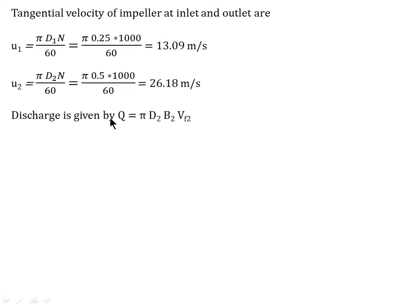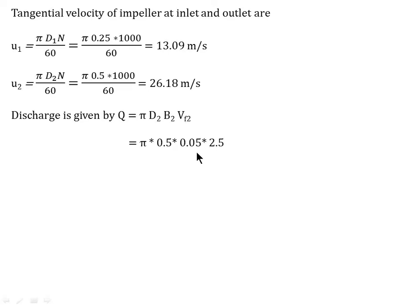Discharge Q is calculated by the formula: Q equals pi × D2 × B2 × Vf2. In centrifugal pumps, area equals pi × diameter × width, and discharge equals area × flow velocity. Substituting D2 equals 0.5 m, B2 equals 0.05 m, and Vf2 equals 2.5 m/s, we get Q equals 0.1963 meter cube per second.